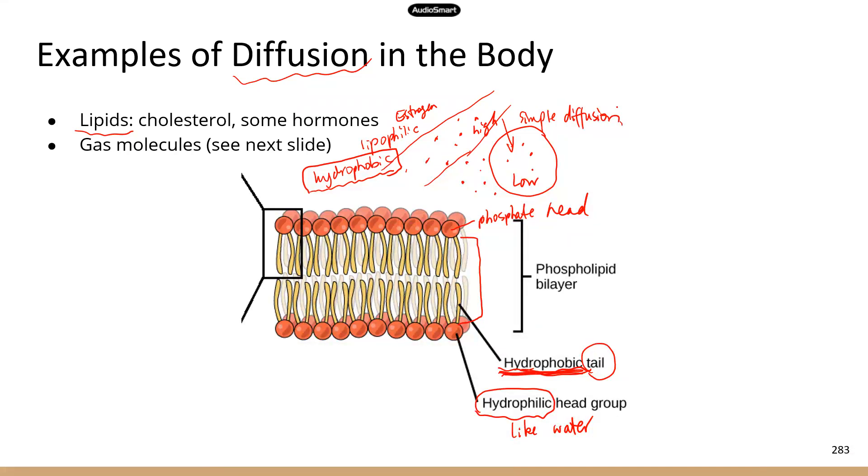Now, another group of molecules that can diffuse through the cells very easily is gas molecules. So we have CO2, we have oxygen. So these gas molecules don't carry any charge. So they don't really like water that much because they themselves have no charge.